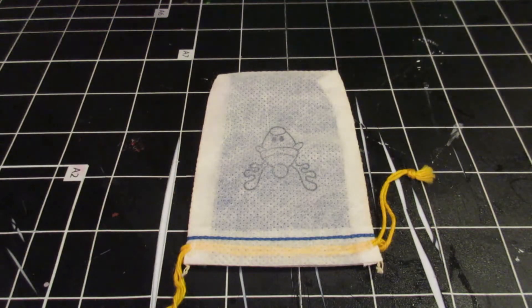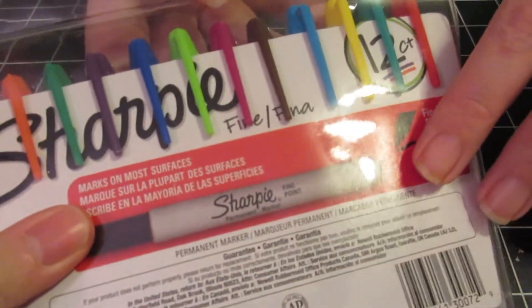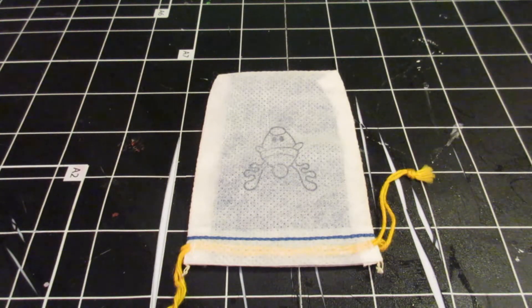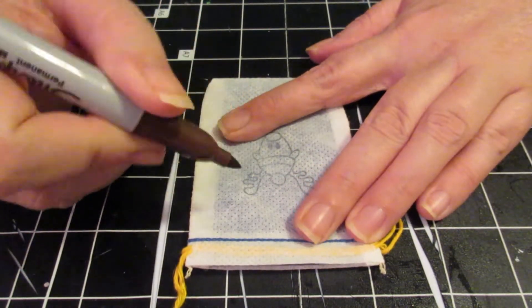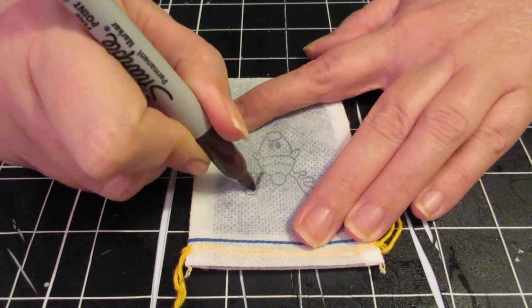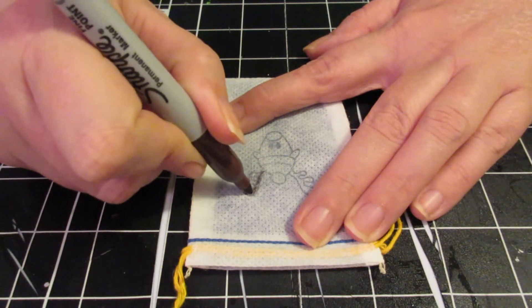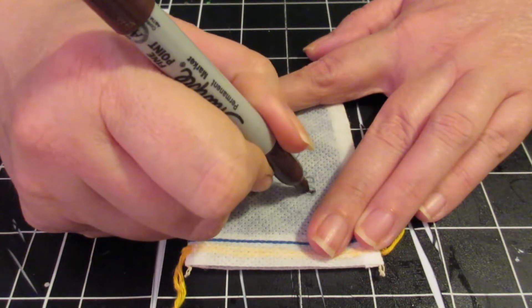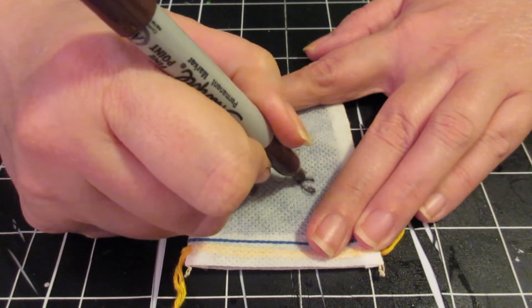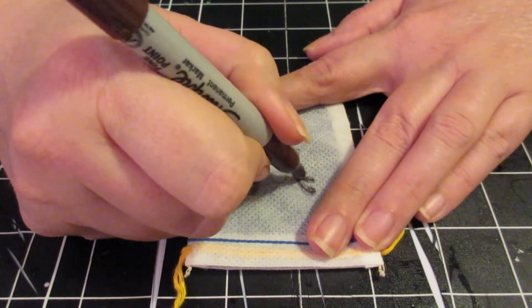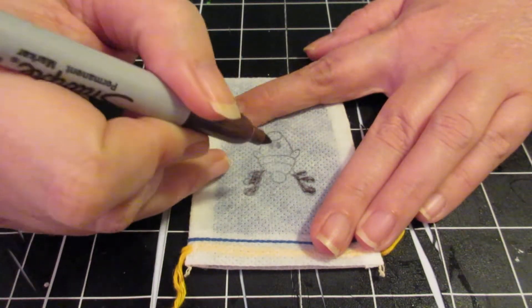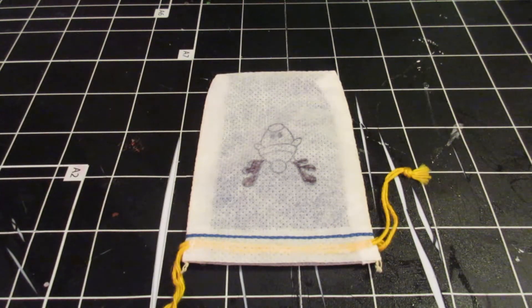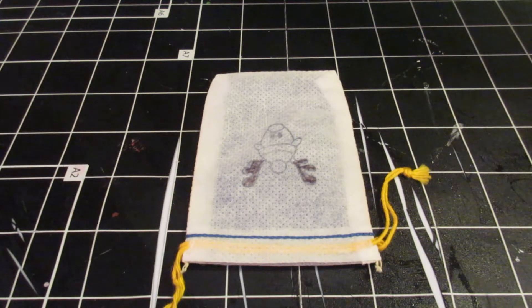Now, I have this set of Sharpie markers. I thought permanent markers was probably the way to go with this. So let's color his little ears with the brown. They're antlers. Now, this is a little bag you're going to give a little kid to take outside and sprinkle reindeer food out in your yard. So you don't need to be exactly perfectly precise.